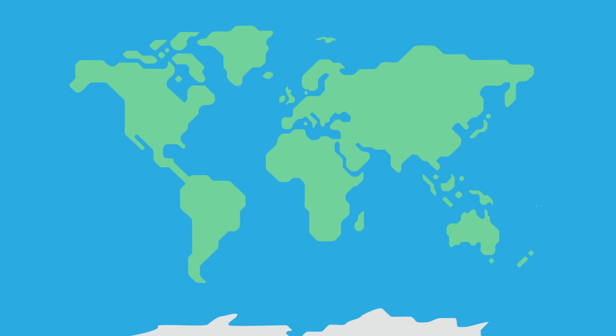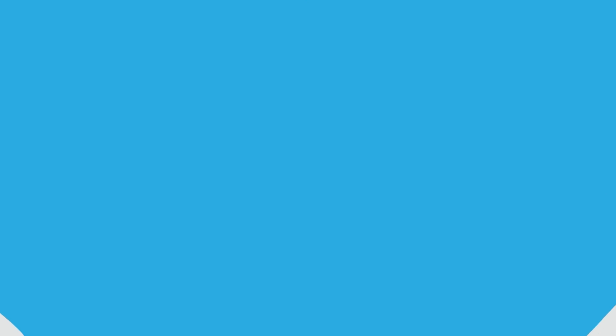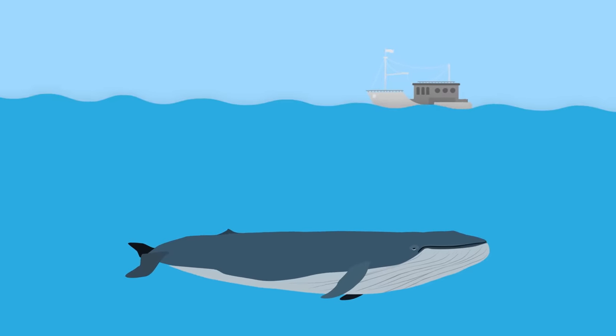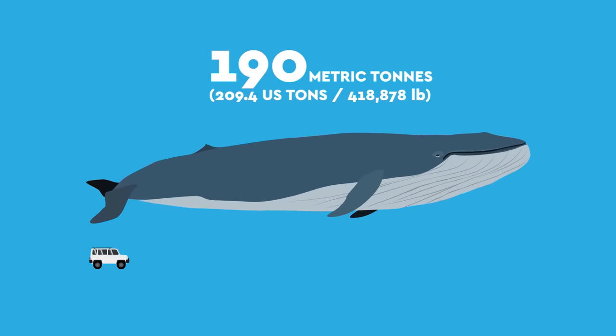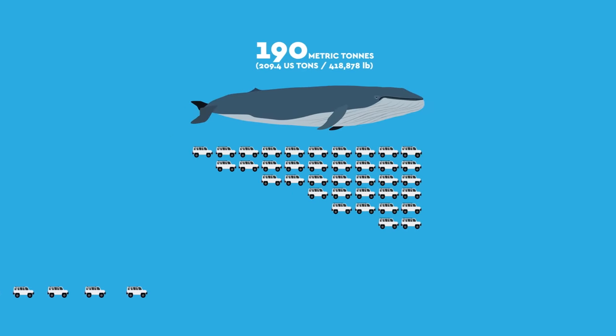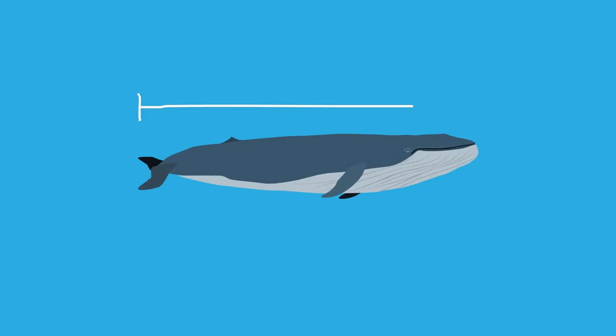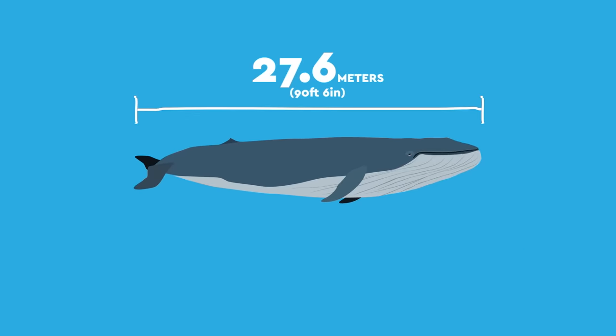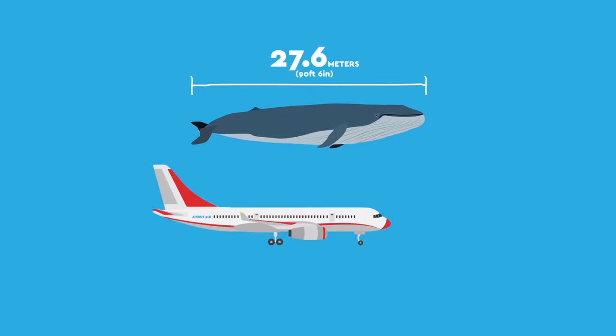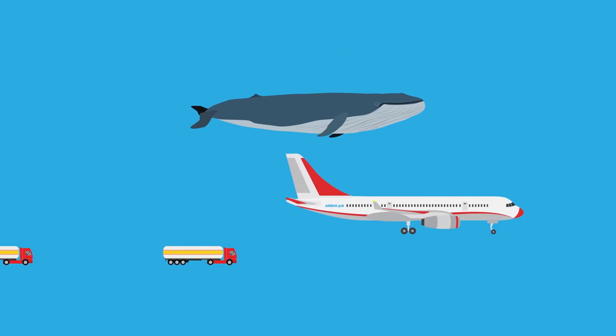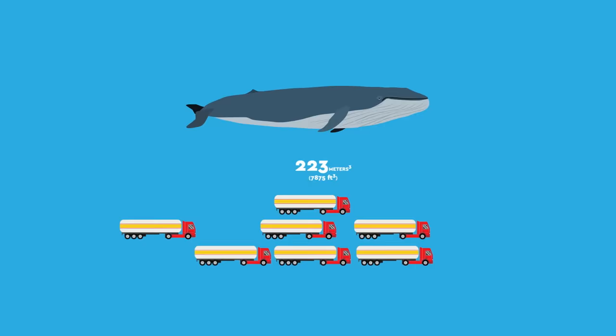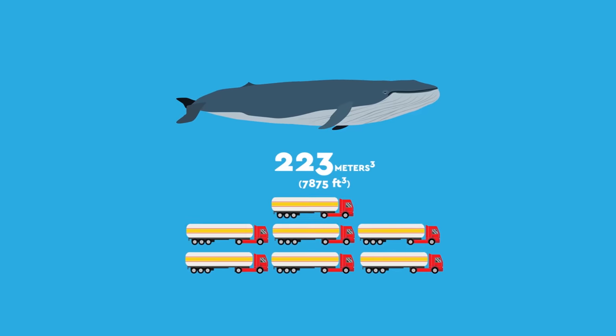If the Blue Whale sets the benchmark by which all other living creatures are measured, it probably makes sense to first establish just how big a Blue Whale can get. The biggest one ever discovered was found in the Southern Ocean of Antarctica back in 1947. It weighed in at a hefty 190 metric tons, which is the equivalent to 104 standard family SUVs. It also measured a huge 27.6 meters long, close to the length of a short-haul airliner, and its estimated volume was roughly the size of seven fuel trucks at 223 cubic meters. Remember that for later.